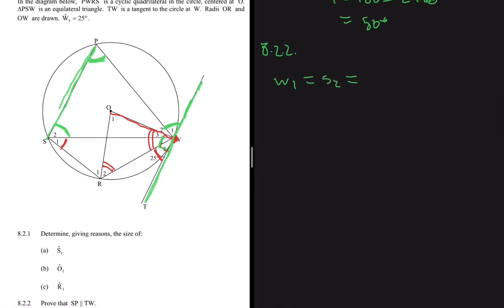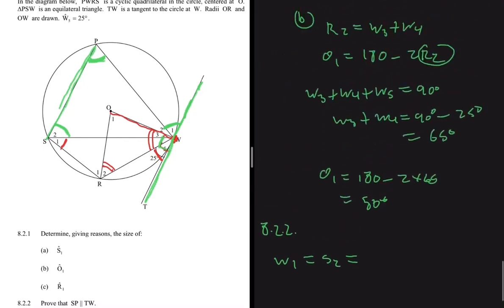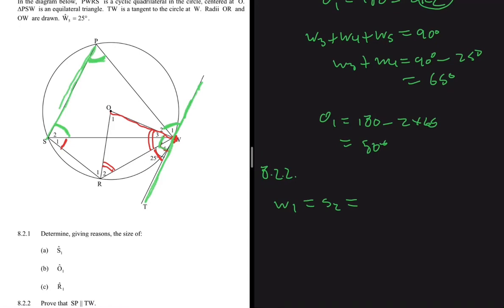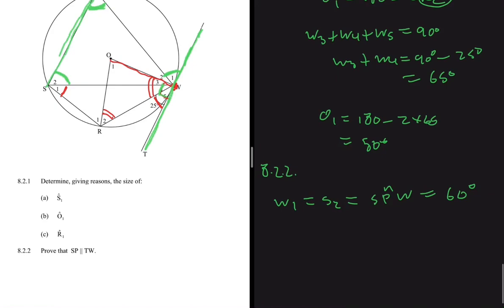We already said that s2 equals 60 degrees. Why are we saying s2 equals 60 degrees? Because triangle PSW is equilateral. So w1 equals s2, but s2 equals SPW. These are angles on an equilateral triangle and all those angles will be equal to 60 degrees. We are done with 8.2.2. We can give a reason and say that they are alternate angles.